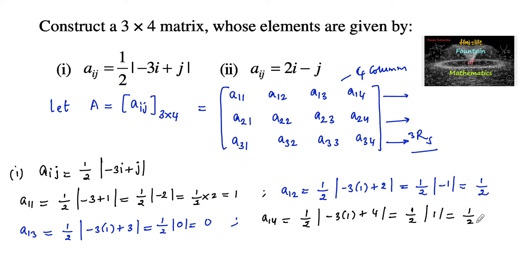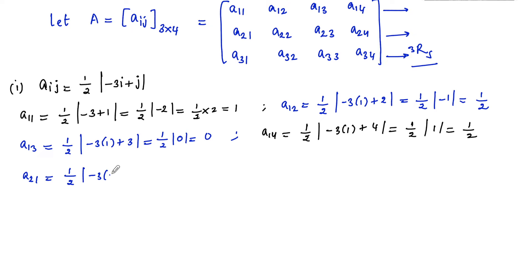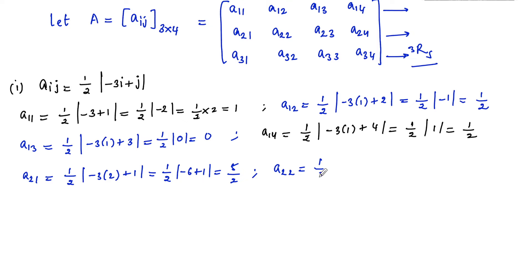Next, A21 = (1/2)|−3×2 + 1| = (1/2)|−6 + 1| = (1/2)|−5| = 5/2. And A22 = (1/2)|−3×2 + 2|.